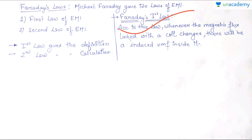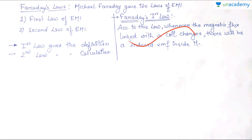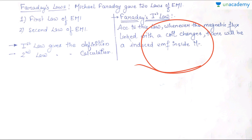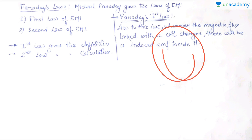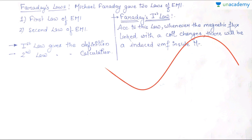So according to this law, when there is a change in magnetic flux linked with the coil, there will be an induced EMF, and due to this voltage there will be an induced current inside the coil.